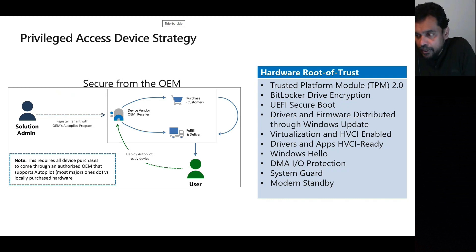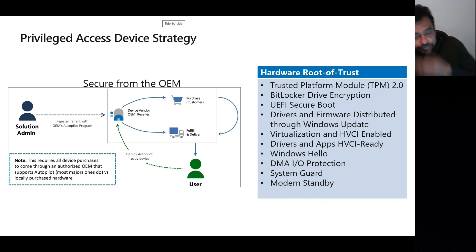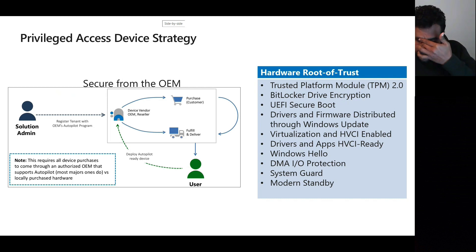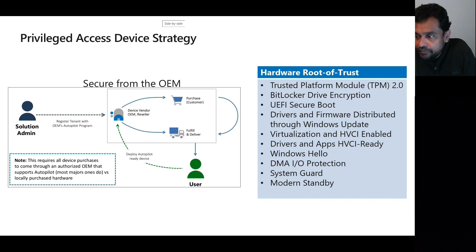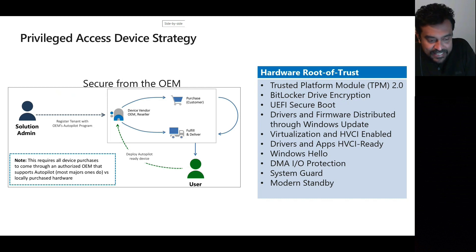For the Privileged Access Workstation itself, several security implementations can be applied: a TPM (Trusted Platform Module), BitLocker encryption for the device, UEFI Secure Boot (supported in Windows 10 from version 1703 onward) to protect against boot sector viruses, drivers updated through Windows Update, Windows Hello, DMA (Direct Memory Access) input/output protection, and System Guard Modern Standby.